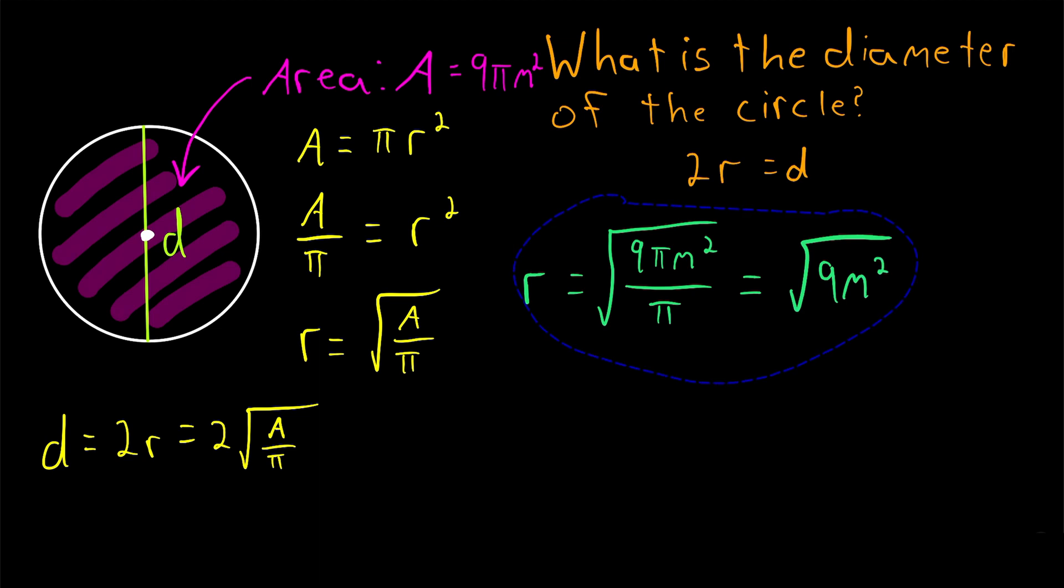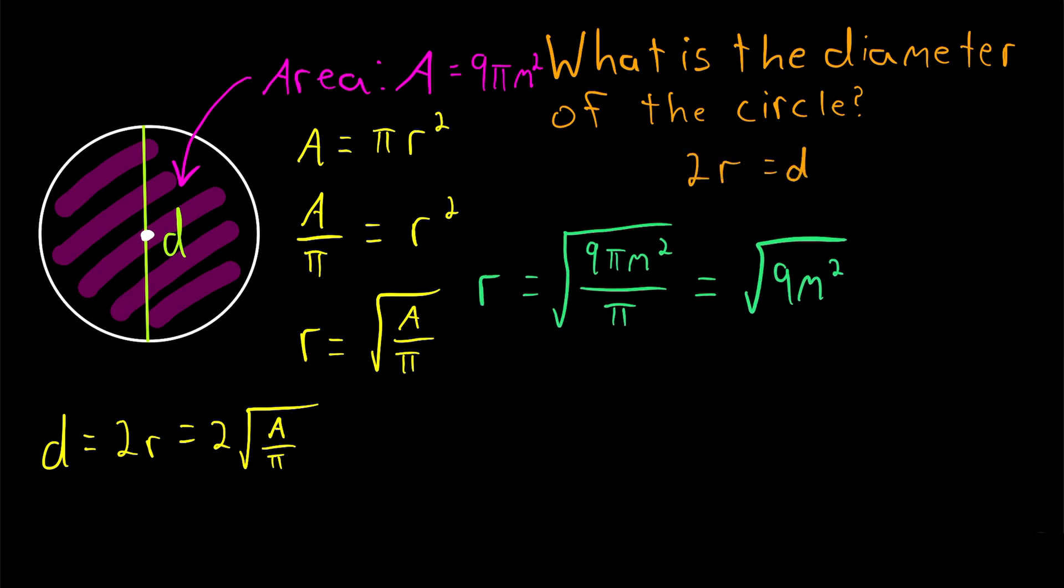Now the square root of 9 is 3. The square root of meters squared is just meters. So the square root of 9 meters squared is 3 meters. Easy peasy.